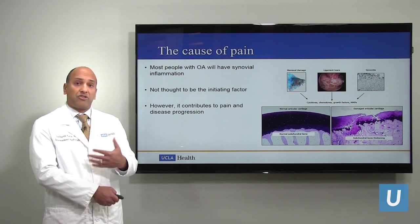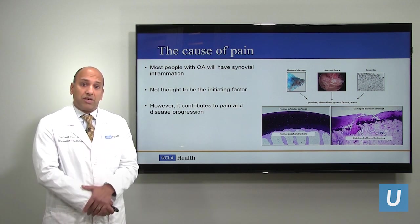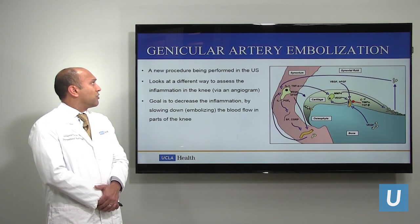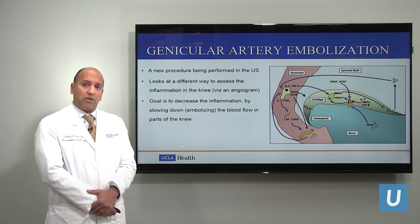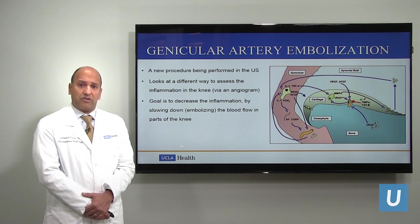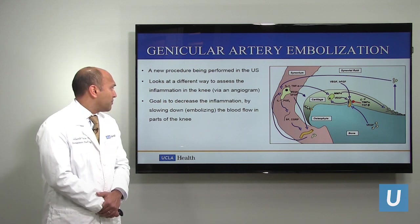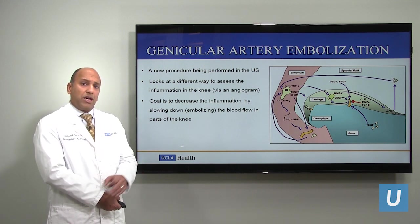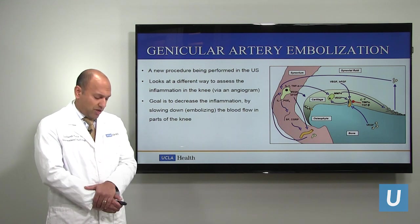The goal is to stop this inflammatory process so we can preserve the joint and decrease people's pain. One way we can do this is genicular artery embolization — a new procedure being performed in the United States. The goal is to stop this inflammatory process by slowing down the blood flow in the arteries in the knee in order to decrease the inflammation.